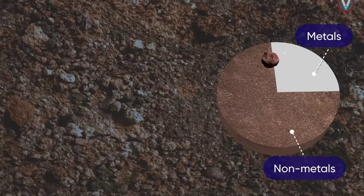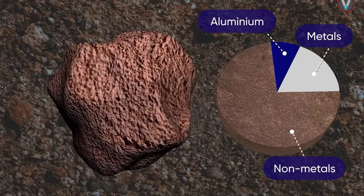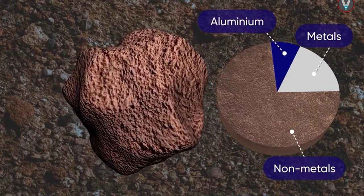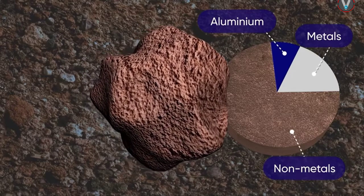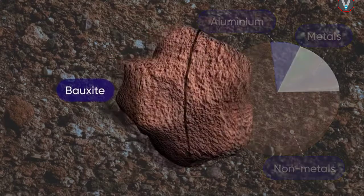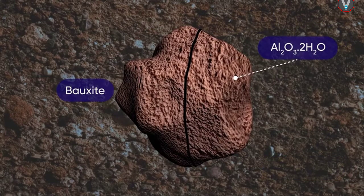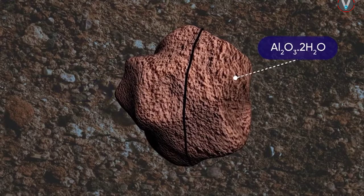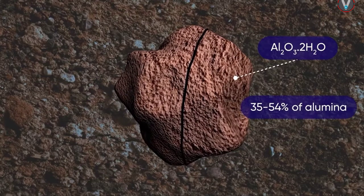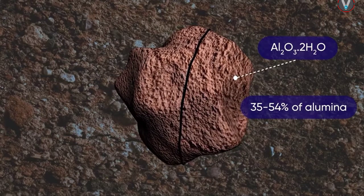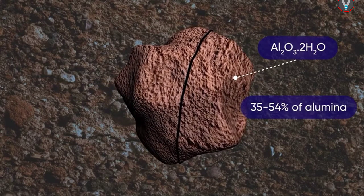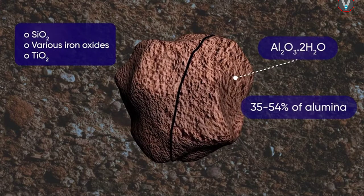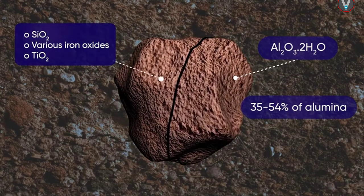Aluminium is the most abundant metal present in the earth's crust. Although the principal ore of aluminium is bauxite (Al₂O₃·2H₂O), it contains only 35 to 54 percent of aluminium, the rest being a mixture of silica, various iron oxides, and titanium dioxide.